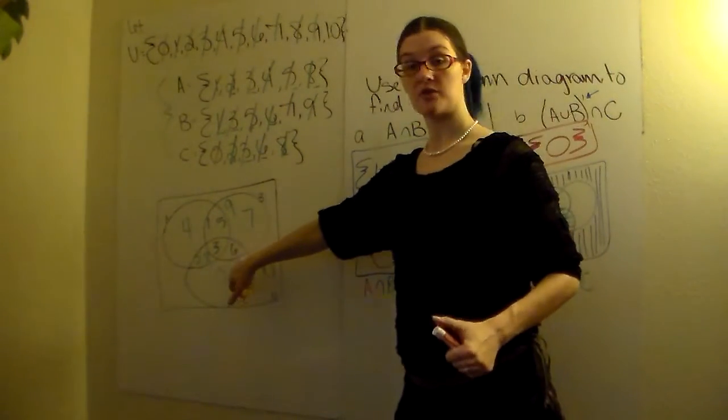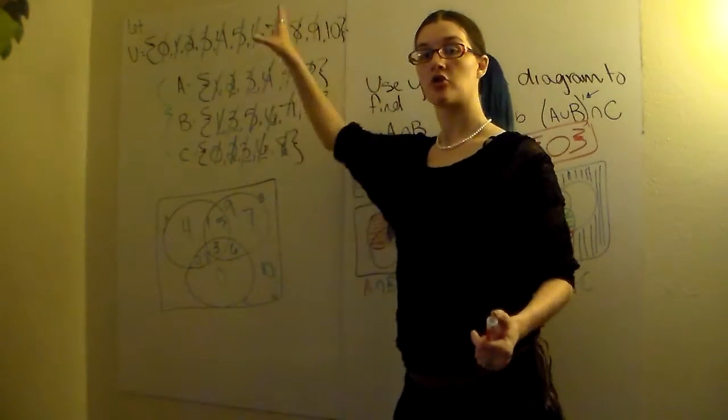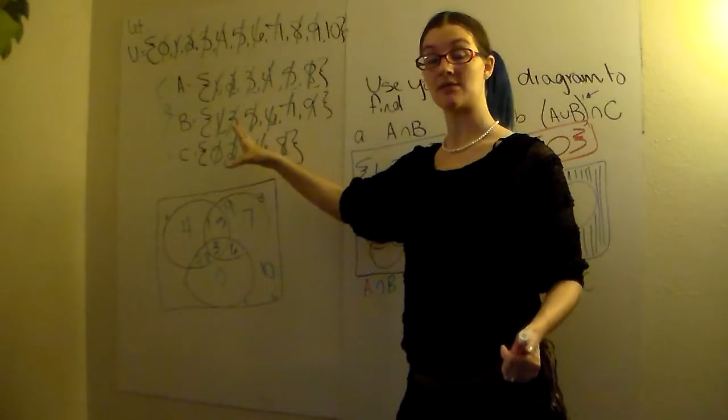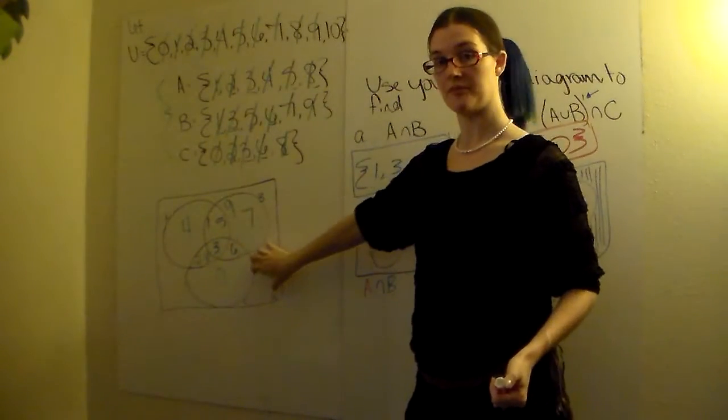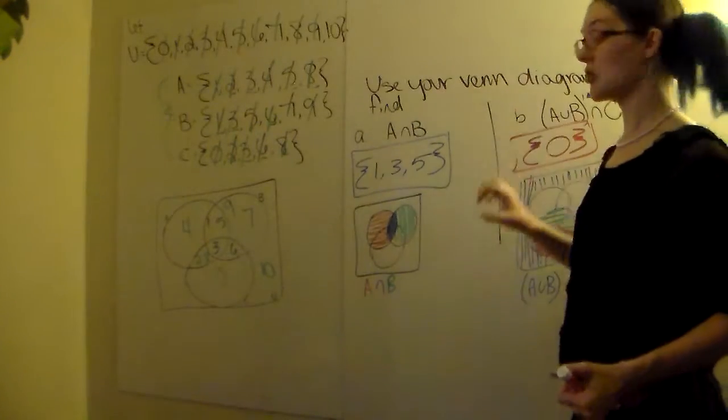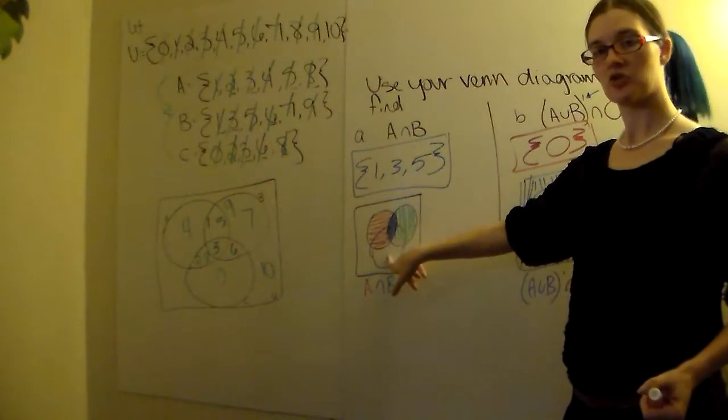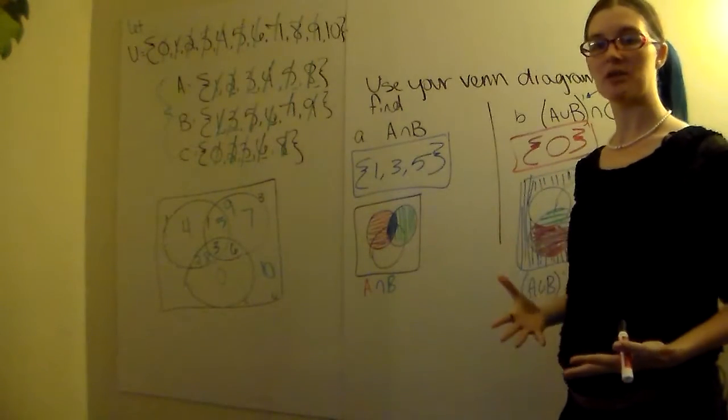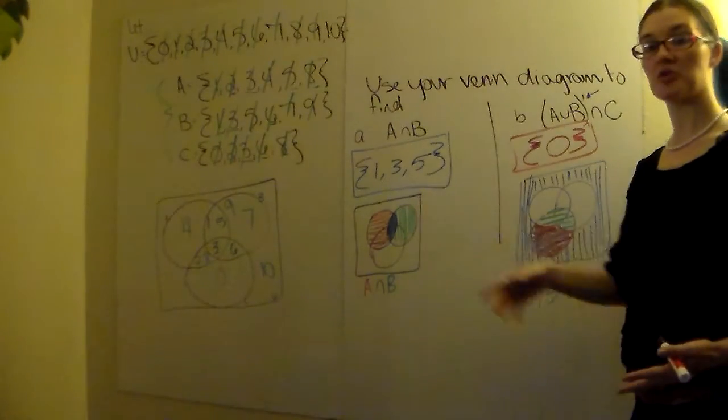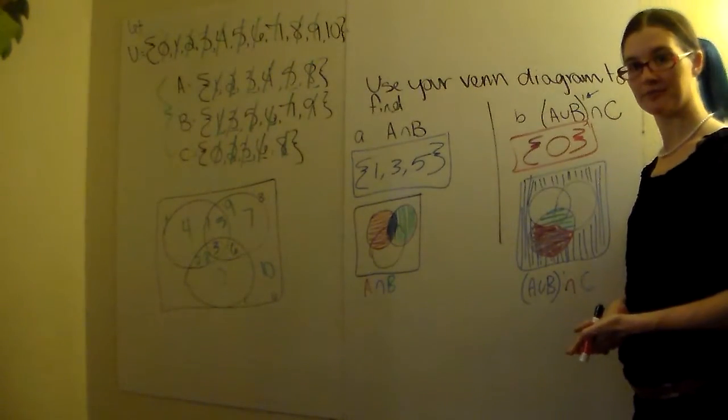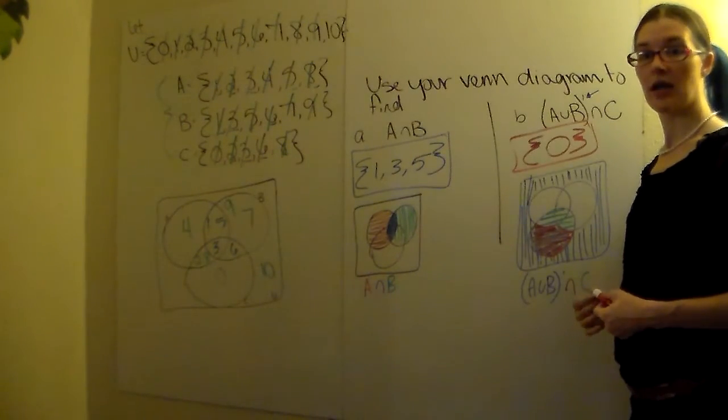So, recap when doing your Venn diagram. Start from the middle. Work your way out. Cross the numbers off as you go so you can easily see if something was missed or what's left over for the universal. When you're doing the questions that are going to follow, use your shading. Draw a picture. Get a visual idea of what is going on. That way you can easily see, okay, which numbers are included in my answer. If you have any questions, please send me an email. And have a great day.